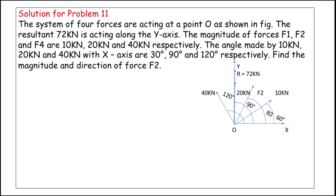From the diagram, point O has x and y axes drawn. F1 (10 kN) is at 30°, F2 is unknown with direction θ2, F3 (20 kN) is at 90°, F4 (40 kN) is at 120° from the x-axis. The resultant along the y-axis is 72 kilonewtons.